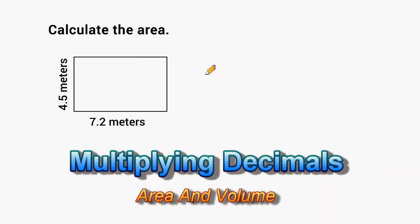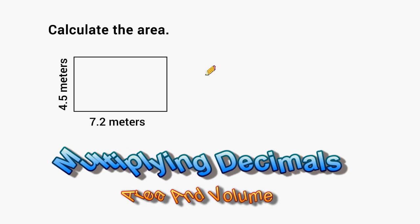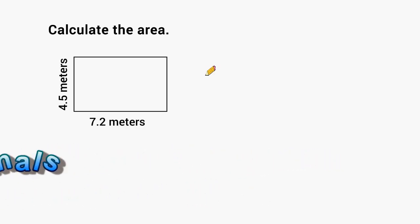Hey, this is Mr. Masonette, and what we're going to do in this tutorial is practice multiplying decimals together to find the area of a rectangle, a triangle, and the volume of a rectangular prism.